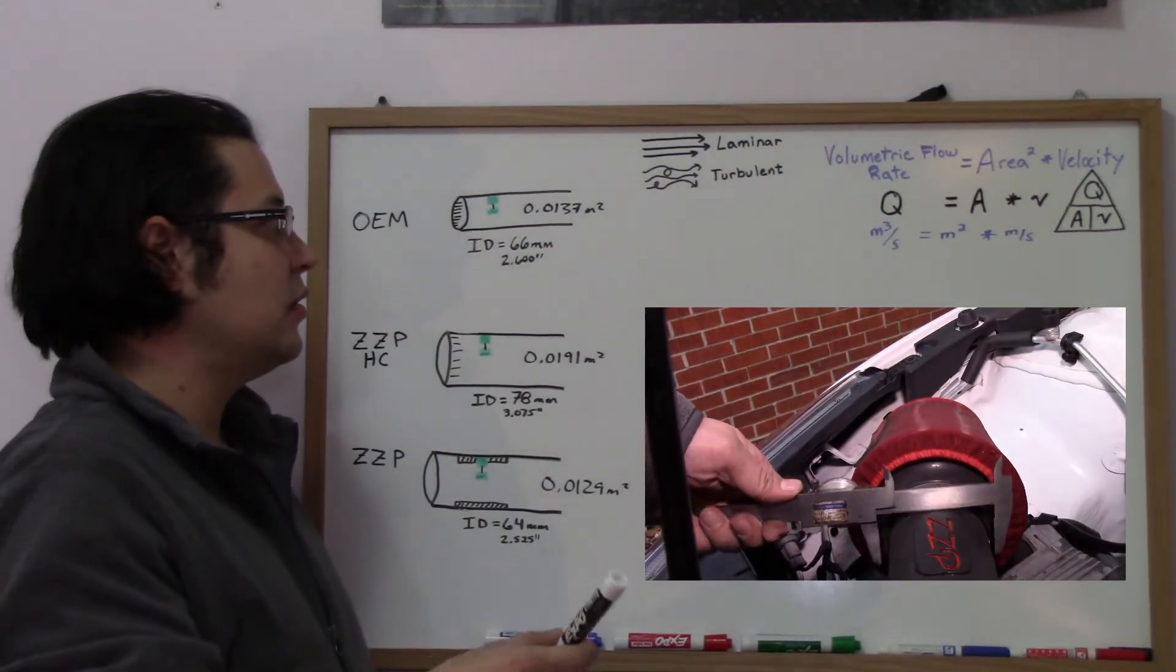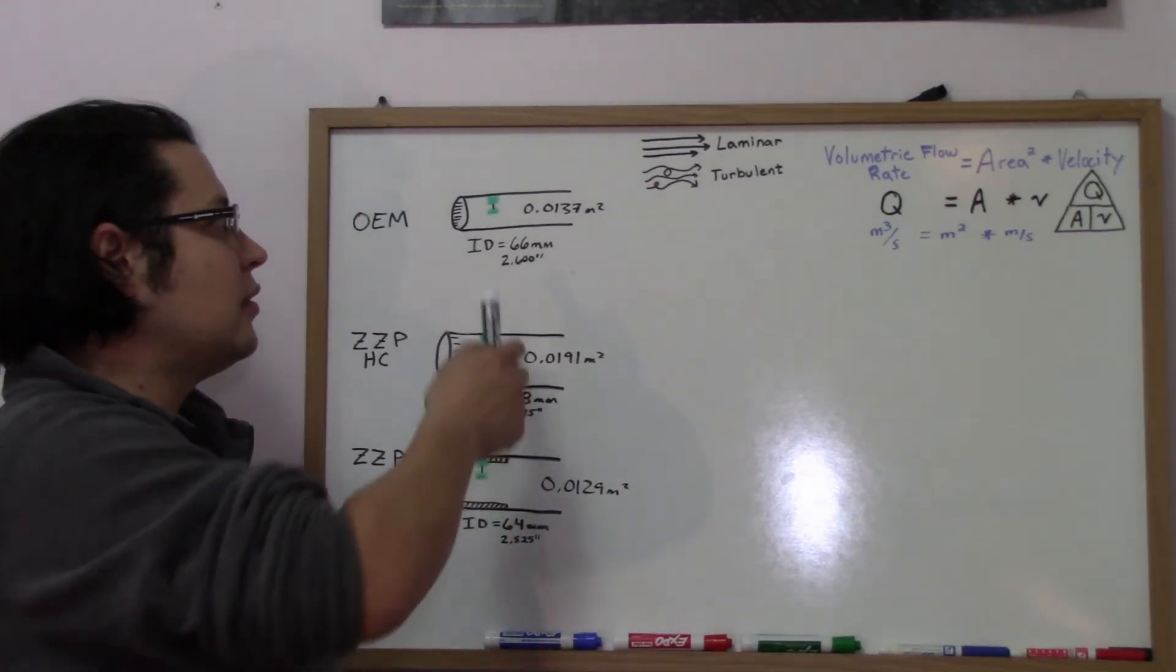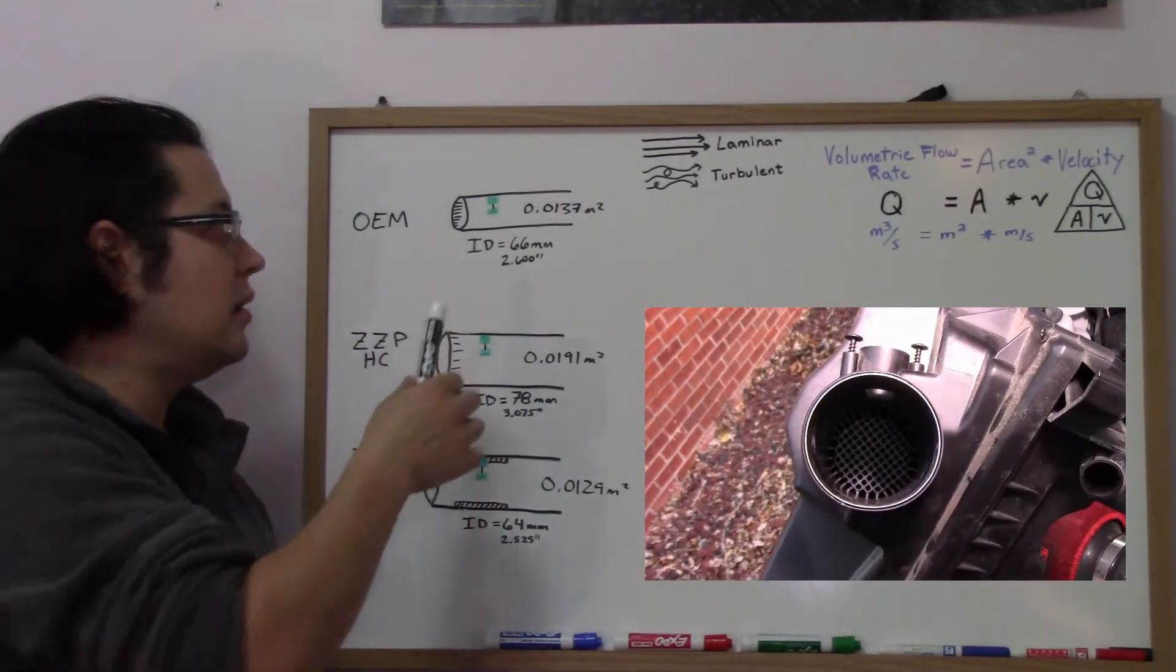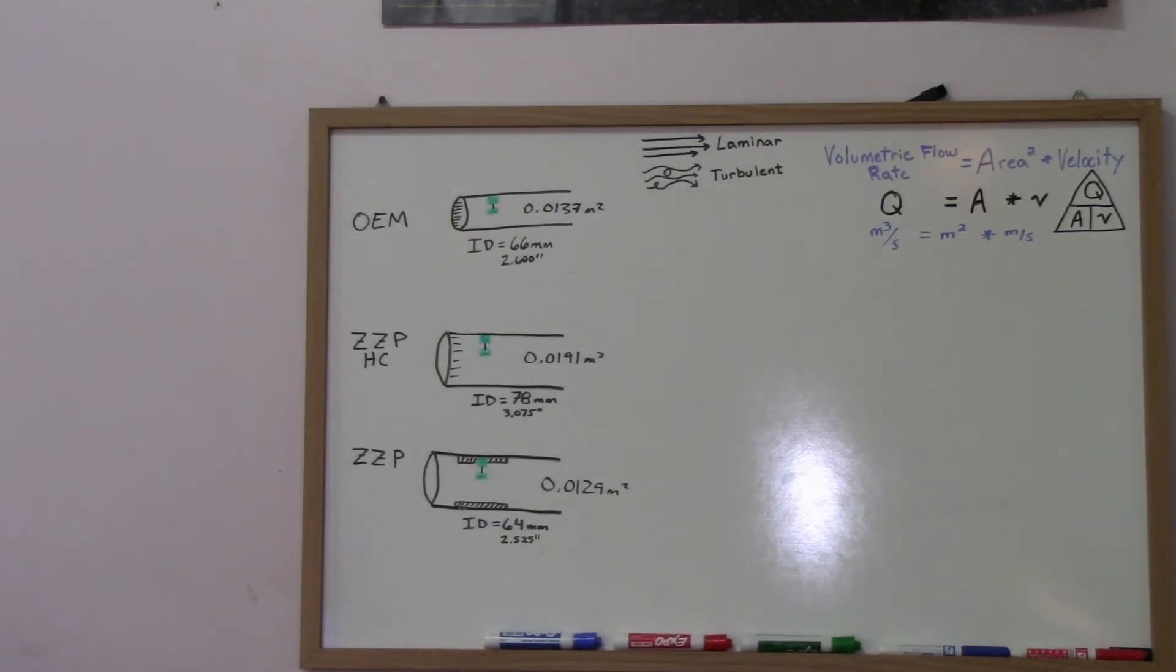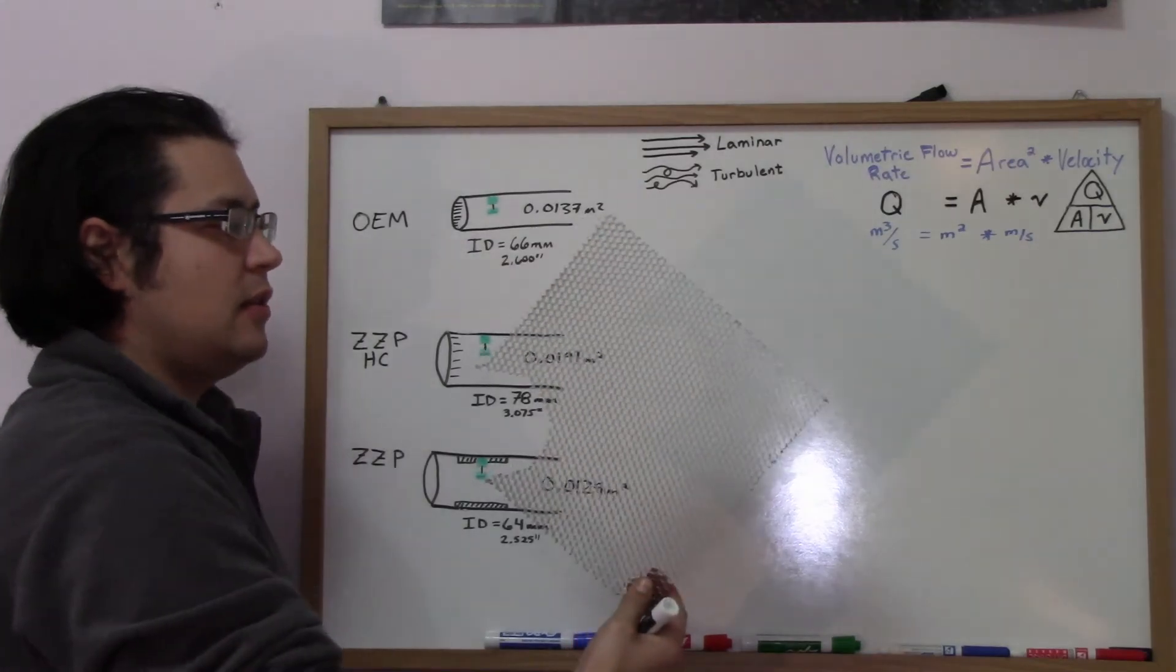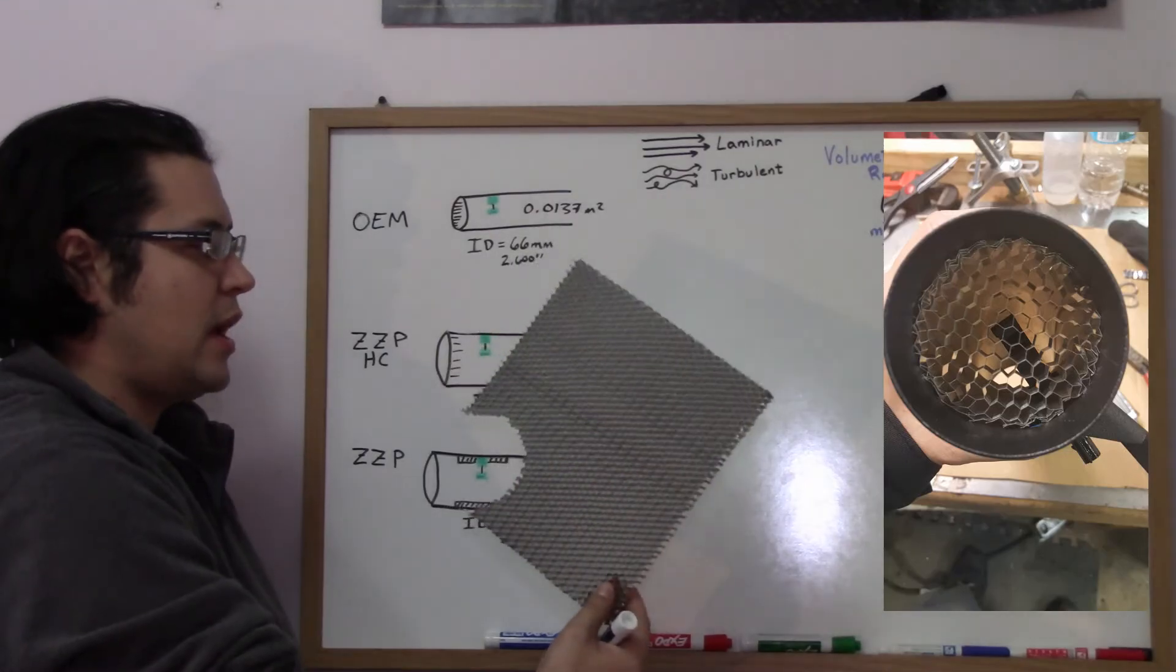Another thing you'll notice is a laminar element, a grid pattern on the OEM. What I did was I took some of this from eBay, this honeycomb pattern here. This is aluminum, pretty thin wall, quarter inch spacing.